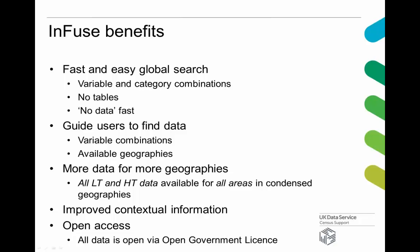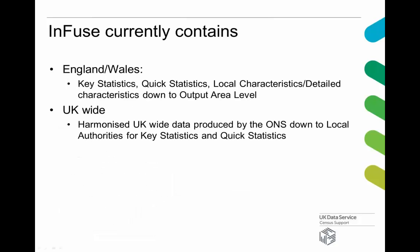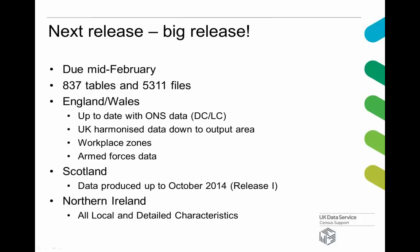All the data is now open access via open government licence, so we've been able to remove the authentication we previously had on the interfaces. To recap on what the data in Infuse currently contains: for England and Wales it contains key stats, quick stats, local characteristics, and detailed characteristics down to output area level. UK-wide, we've only got data down to local authority level — the UK-wide harmonised outputs. We are planning a major release which will more than double the amount of data in Infuse by the middle of February. This was supplied in about 837 tables and another 5,000 files.